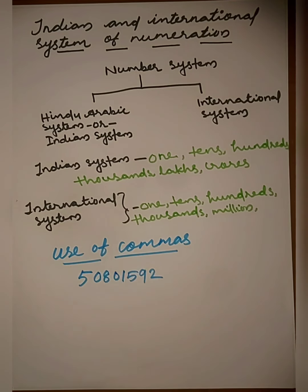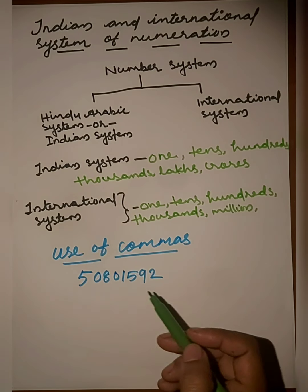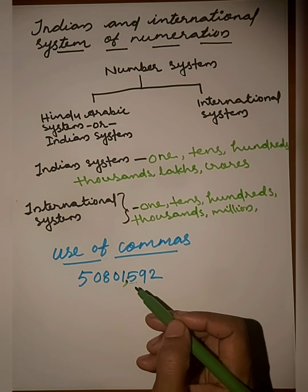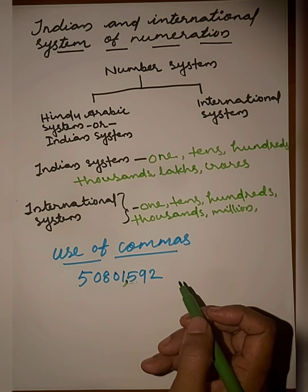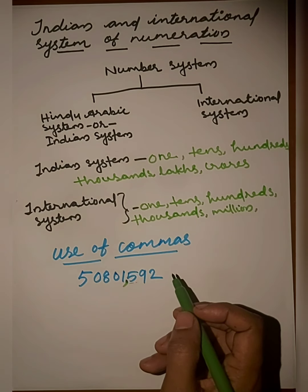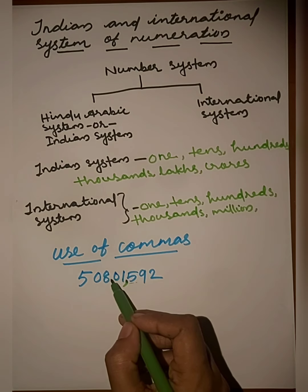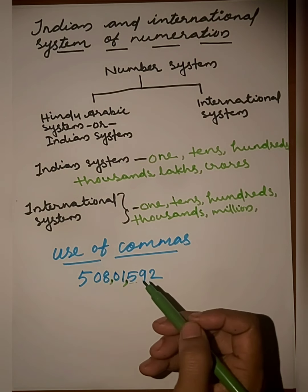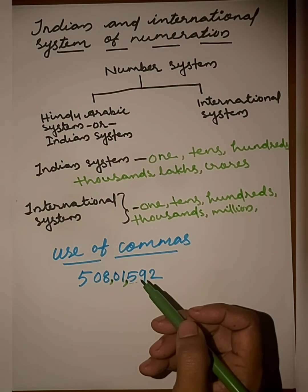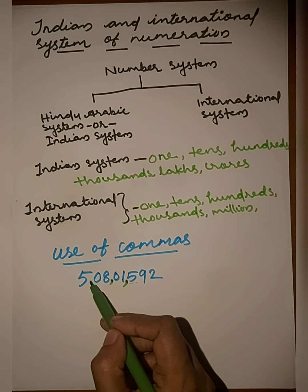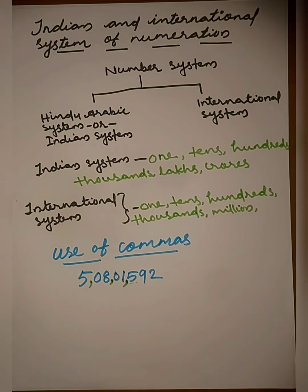For example, let's see how to put commas in a number. The first comma goes after the hundreds place — three digits from the right. The next comma goes after two more digits, and that is the second comma. The third comma again comes after two more digits.